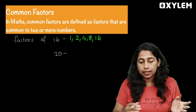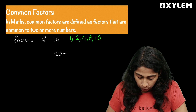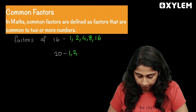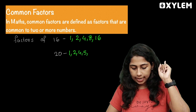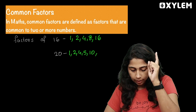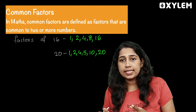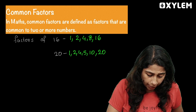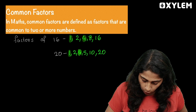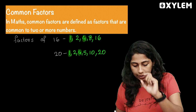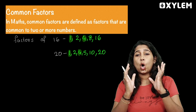The factors of 16 are 1, 2, 4, 8, and 16. The factors of 20 are: 1, 2, 4, 5, 10, 20. The common factors of 16 and 20: 1 is common, 2 is common, 4 is common. So there are 3 common factors: 1, 2, and 4. These are called the common factors.